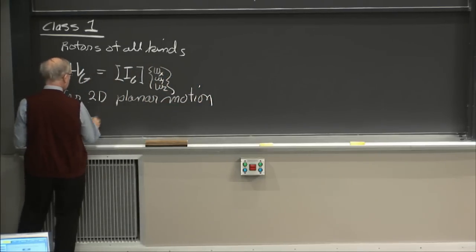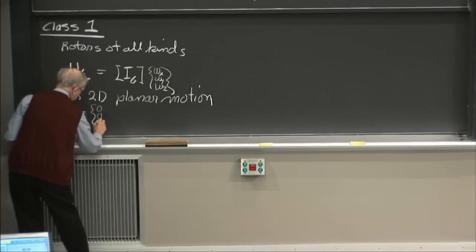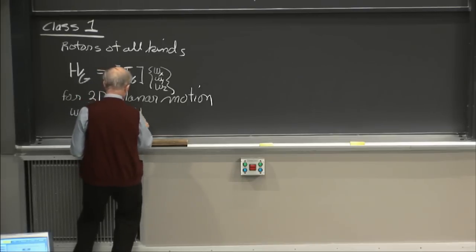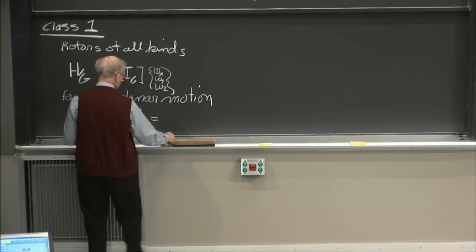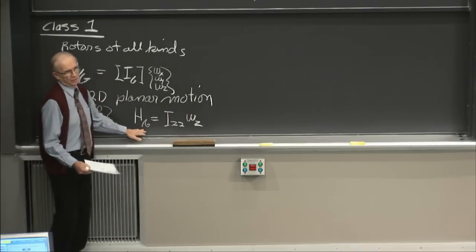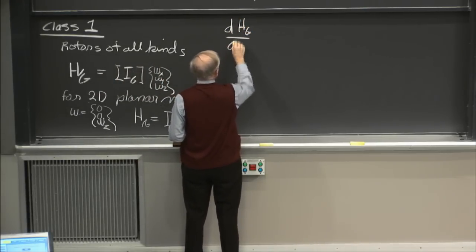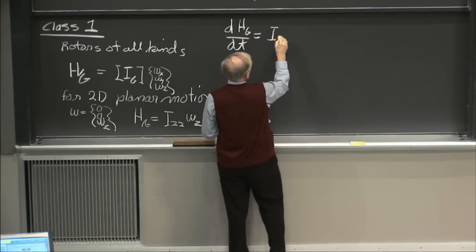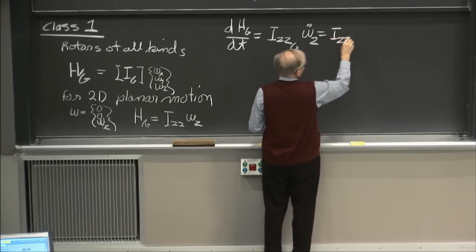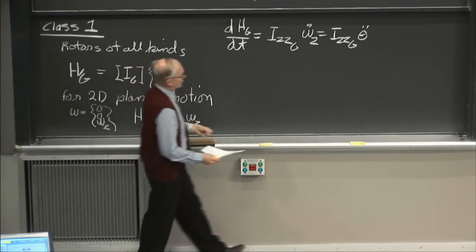For 2D planar motion, omega is (0, 0, omega_z) with z as the rotation axis. The angular momentum H with respect to G just becomes I_zz * omega_z. That's what all those 2D planar motion problems boil down to. And dH_G/dt then is I_zz * omega_z_dot, or in more familiar notation, I_zz * theta_double_dot.